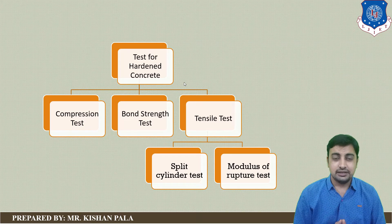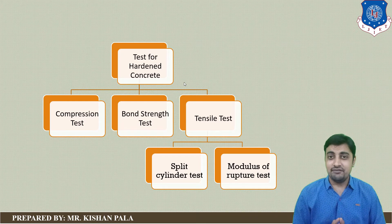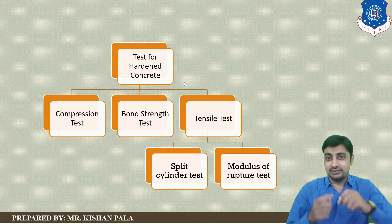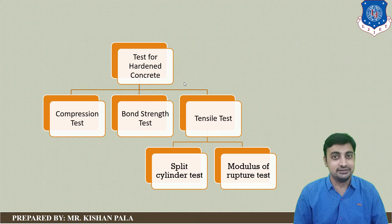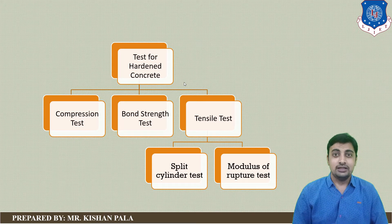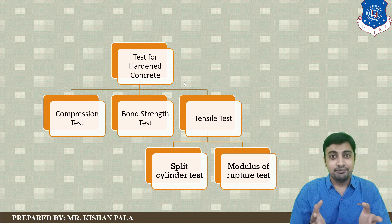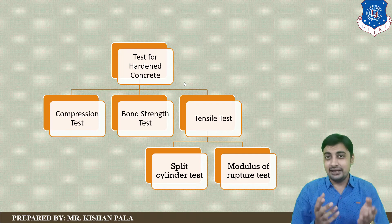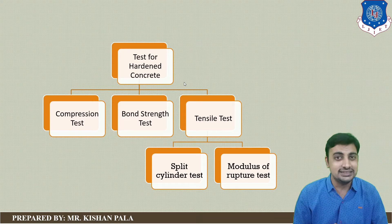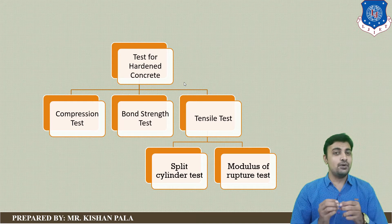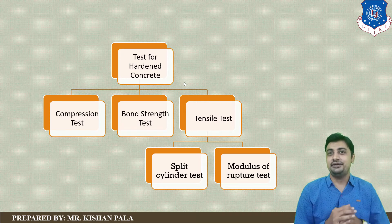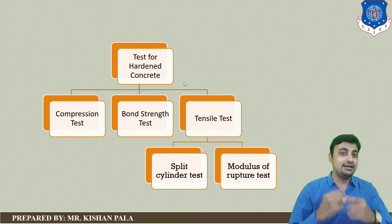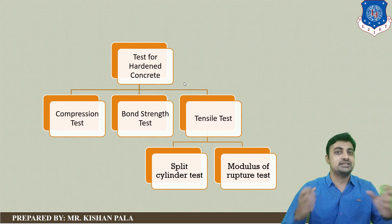After compressive strength, you have to identify the bond strength between steel and concrete mass in your RCC elements. For example, if you are using an RCC column, RCC beam, and slab, you are using steel reinforcement in those elements. In that case, you have to identify the bond between the steel and your concrete mass, which you can determine using the bond strength test.